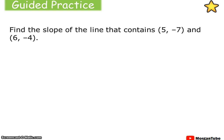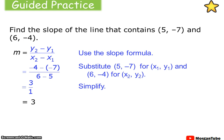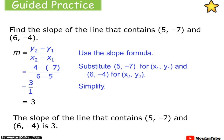Alright, you guys try this one. Find the slope of the line that contains (5, negative 7) and (6, negative 4). Pause the video now. Welcome back. Using the slope formula, the first ordered pair is point 1 and the second ordered pair is point 2. That gives us negative 4 minus negative 7 over 6 minus 5 — the difference of our y's over our difference of x's. We get a simplified slope of 3. So the slope of the line that contains those two points is 3.